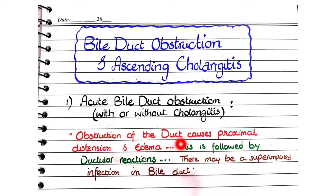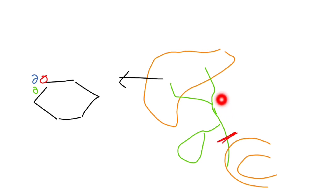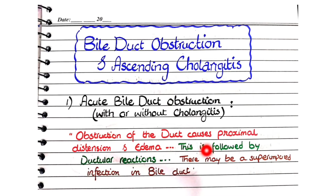The third keyword is that there may be a superimposed infection in the bile duct called ascending cholangitis. When there is obstruction in the bile duct, bile becomes static in the proximal parts. Stasis of fluid in the body makes it vulnerable to infection — bacteria present in the intestine ascend and start to develop colonies in the stagnant bile, resulting in infection called ascending cholangitis.